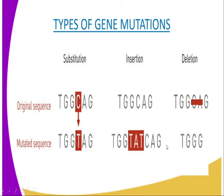Let us start with the first type, which is insertion. This is the addition of an extra base onto an existing DNA strand. The resulting mRNA triplet and the subsequent amino acid alignment will be altered. As you can see from our diagram, our original sequence was TGCAG, but after mutation it became TGG, then TAT was inserted, followed by CAG.